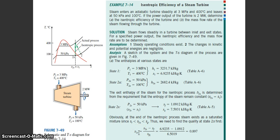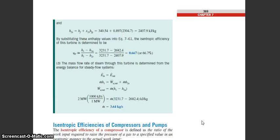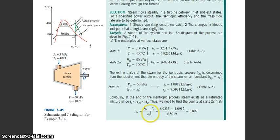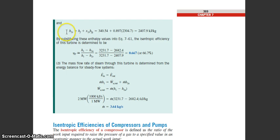From there you can conclude that the point state 2S is in the mixture region. S2S needs to be found using the quality formula that we learned in the past. That means you will get the quality is 0.89. Then you can find H2S using the formula HF plus quality times HFG.